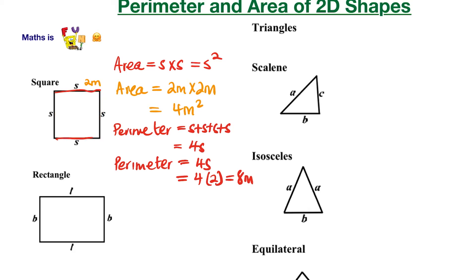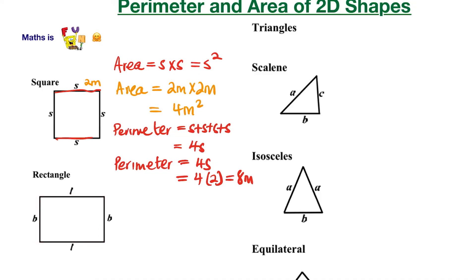Let's go to the bottom shape. This shape is a rectangle, because it has 2 equal long sides and 2 equal short sides. The long side we call the length, and the short side we call the breadth or width. When we calculate the area here, area is equal to side times side as well, but the sides are not equal, so we multiply this side by this side — it's going to be length times breadth.